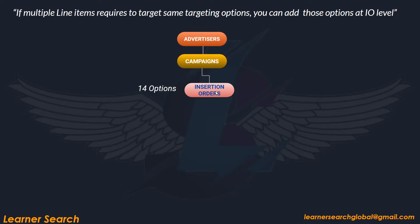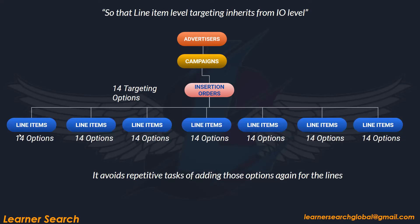At IO level you can set it. For example, if you are working for a client in the same region like US, speaking English language, with some brand safety requirement, and a viewability of 70% — whatever the standard options are, you can set them at insertion orders level. The same targeting options will be inherited by the levels below. Let's assume 14 options are given at IO level — the same options will be inherited by all line items.